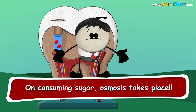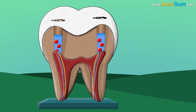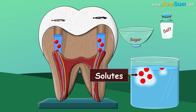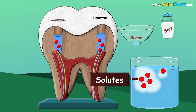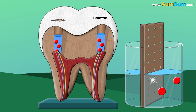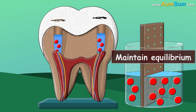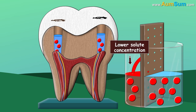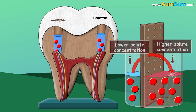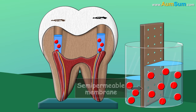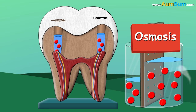What's that? Substances like sugar, salt, etc. that dissolve in liquids are called solutes. When a region has higher solute concentration than the other, then to maintain equilibrium, water moves from lower solute concentration to higher solute concentration through a semipermeable membrane. This process is called osmosis.